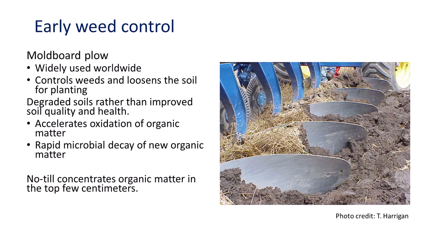A moldboard plow is for early season weed control and seedbed preparation. While tillage can control weeds and loosen the soil to enable planting, long-term intensive tillage with a moldboard plow has degraded soils rather than improved soil quality and health. Plowing loosens the soil and buries crop residues, and excess oxygen injection accelerates humus oxidation and degrades organic matter.